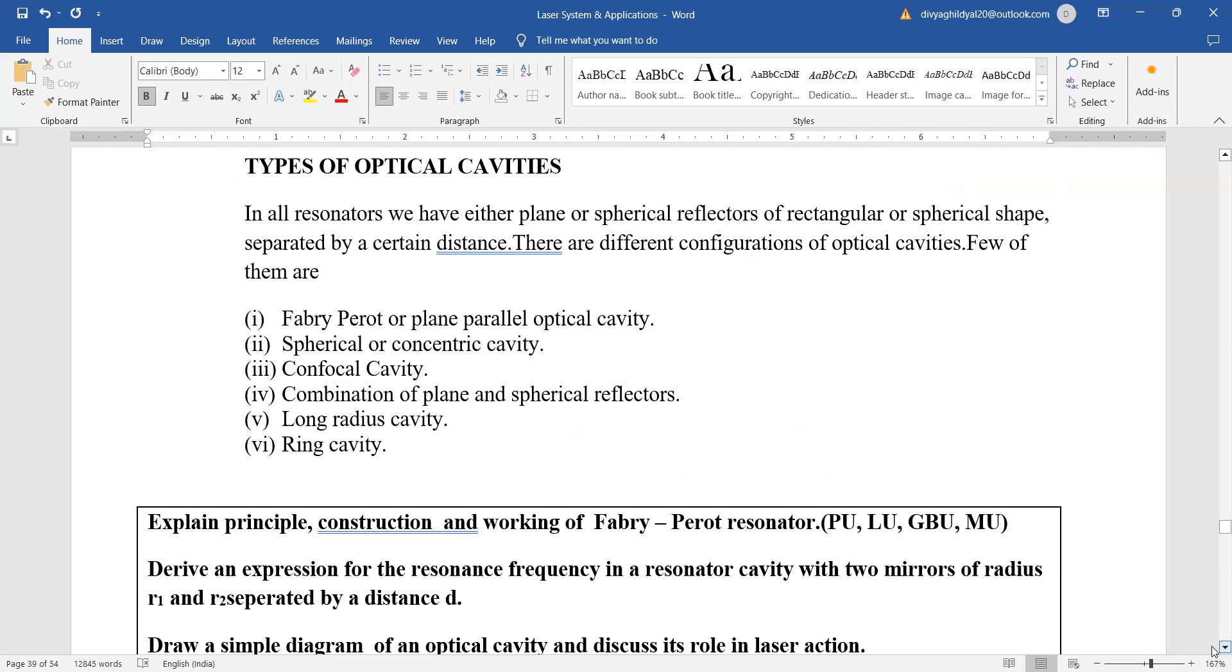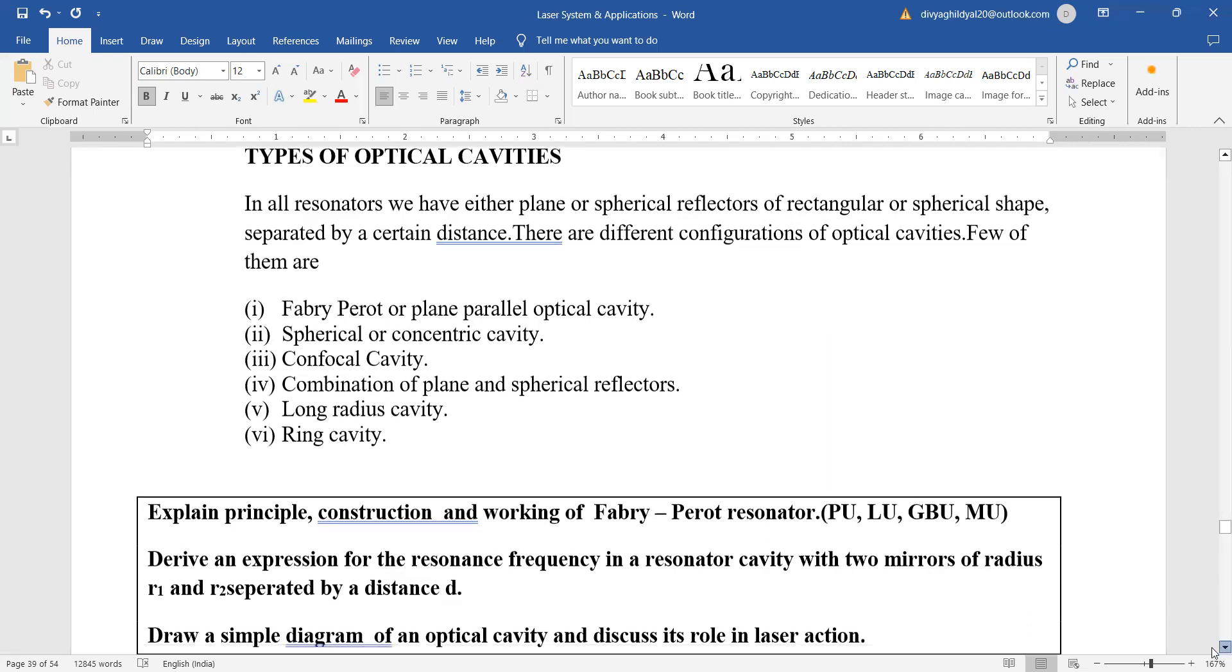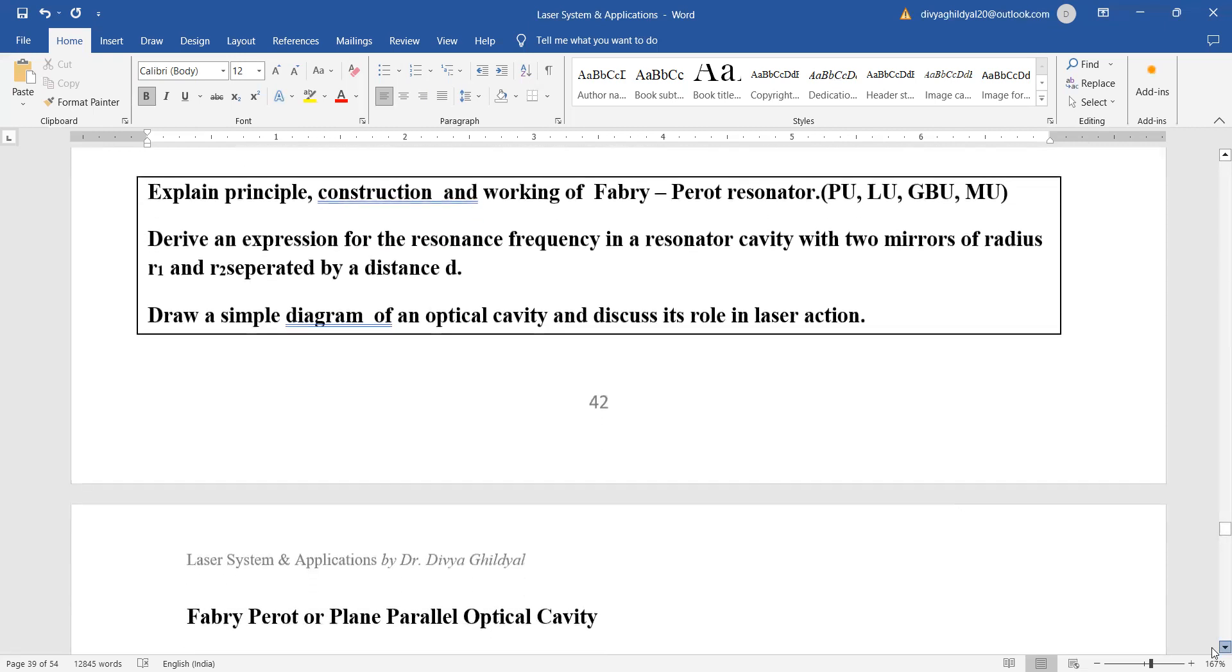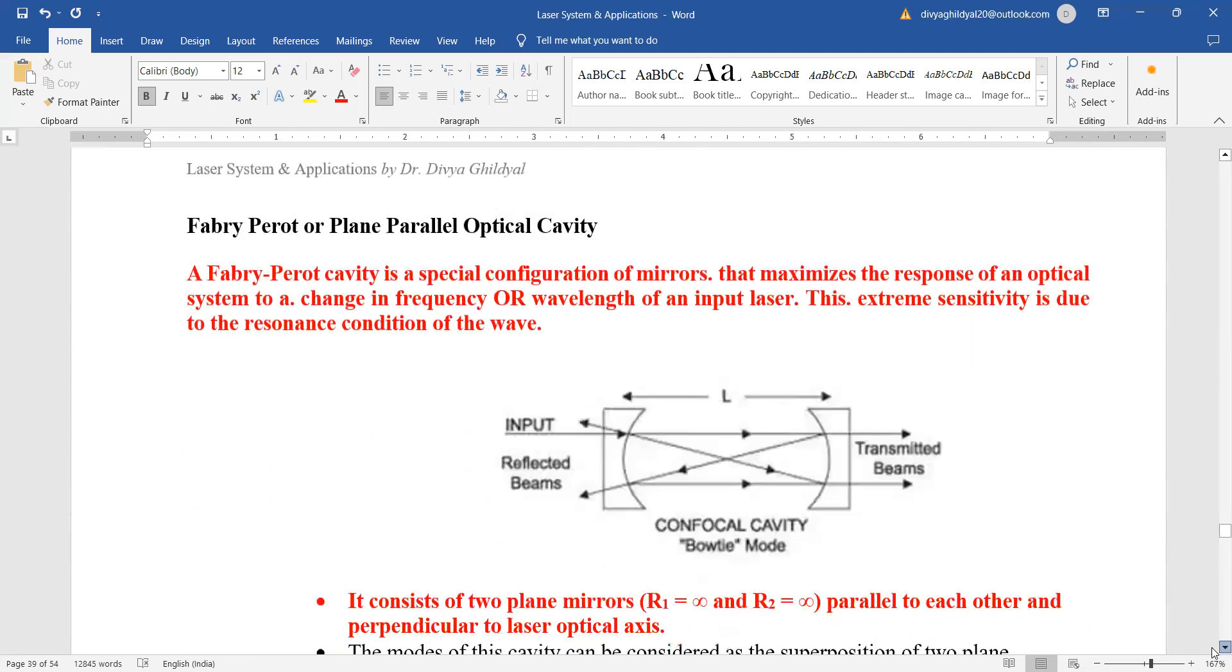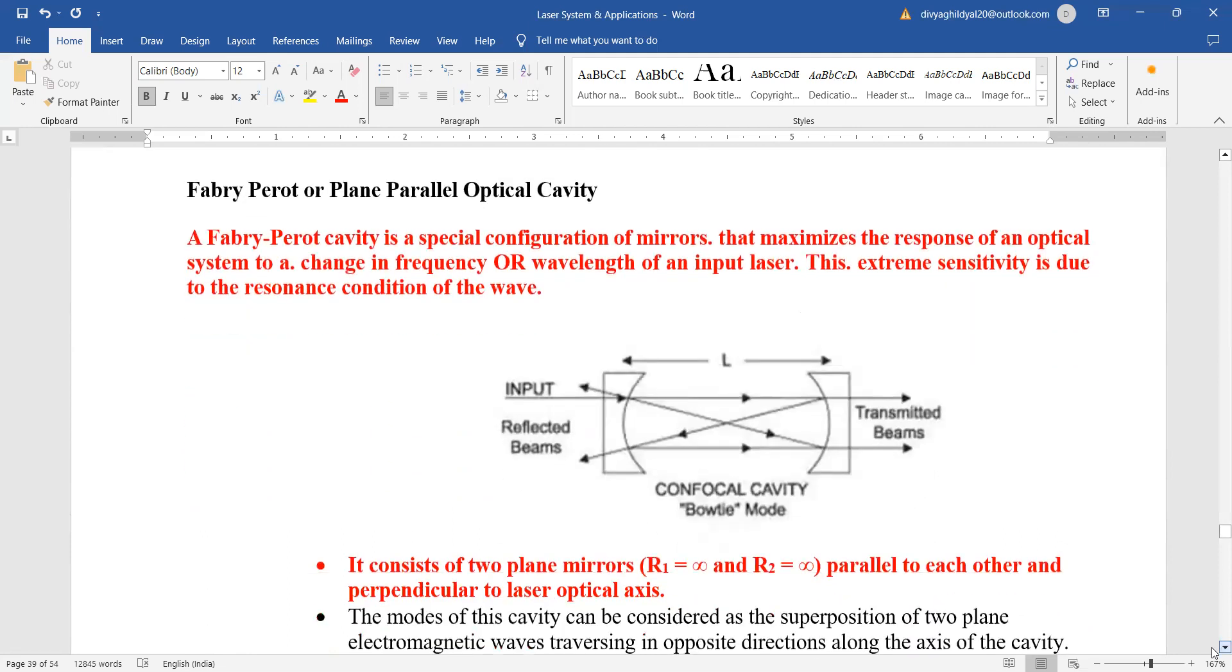There are different configurations of optical cavities and the most common one is your Fabry-Perot or parallel plane, parallel optical cavity, spherical or concentric cavity, confocal cavity, etc. Explain the principle and construction of Fabry-Perot resonator. Very important question. Fabry-Perot or plane, parallel optical cavity.